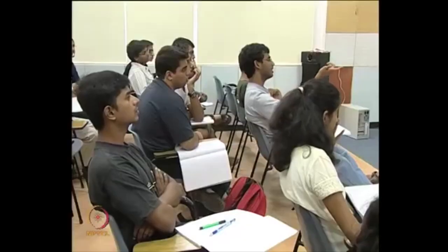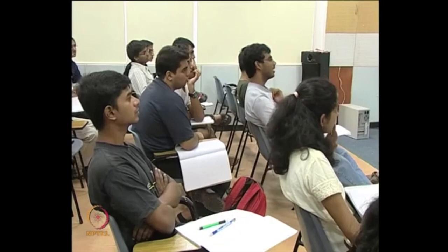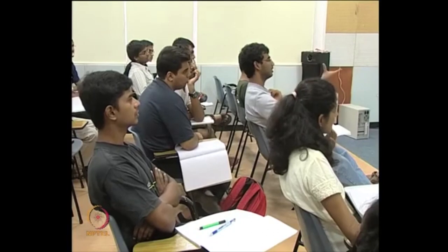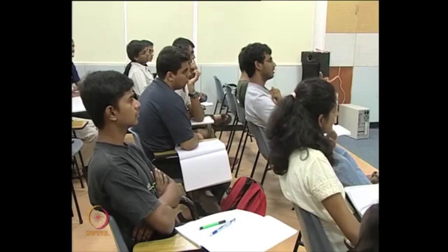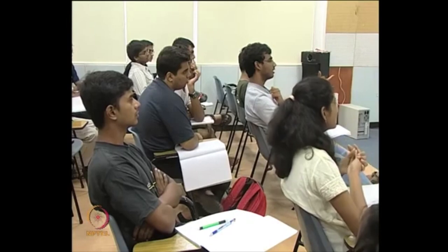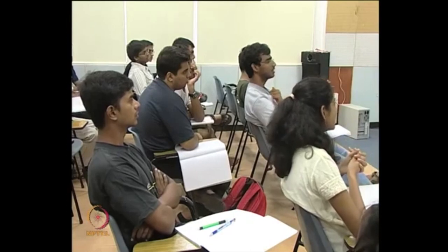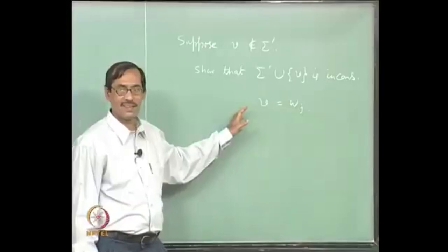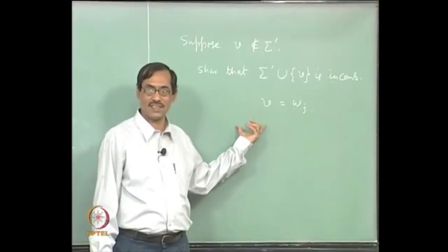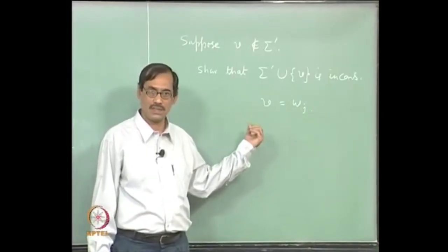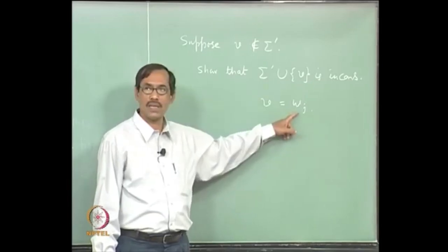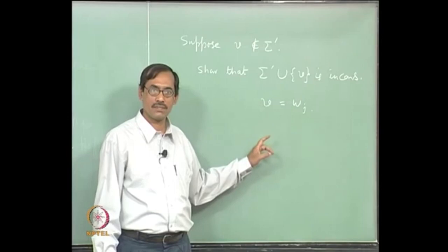Sigma_j is a subset of sigma prime. So if sigma prime union {v} is consistent, then sigma_j union {v} would have also been consistent. Why? That is monotonicity. If a set is consistent, then its subset is also consistent — that is monotonicity. So sigma_j union {w_j} is consistent.